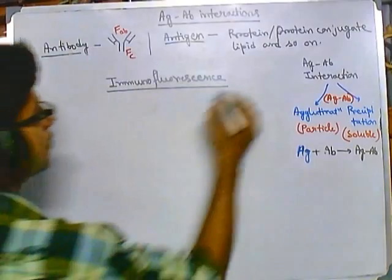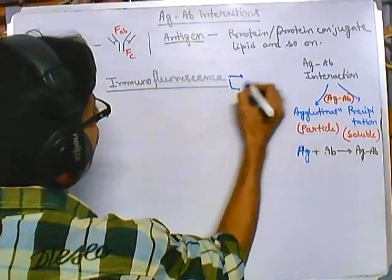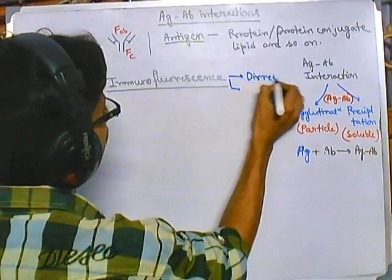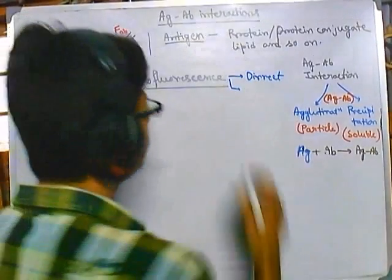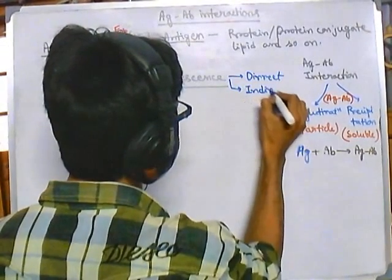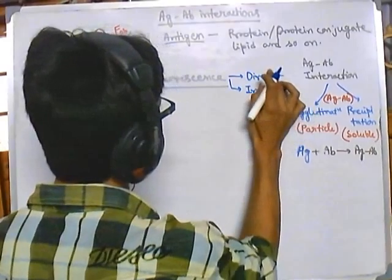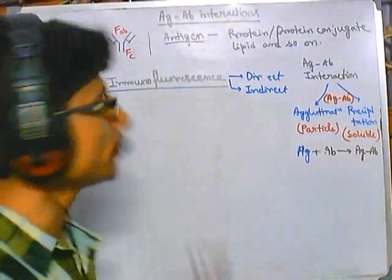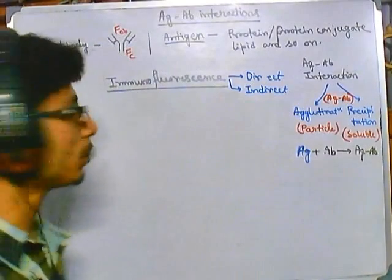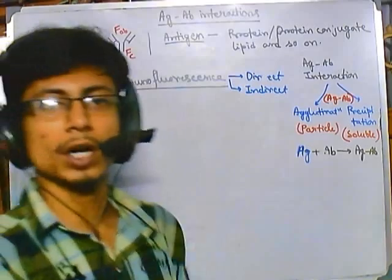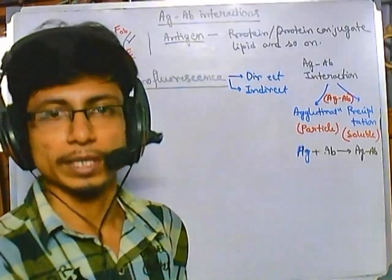Immunofluorescence can be of two types: the direct type and the passive or indirect type. The direct type of immunofluorescence gives us the presence of an immune complex in a system.